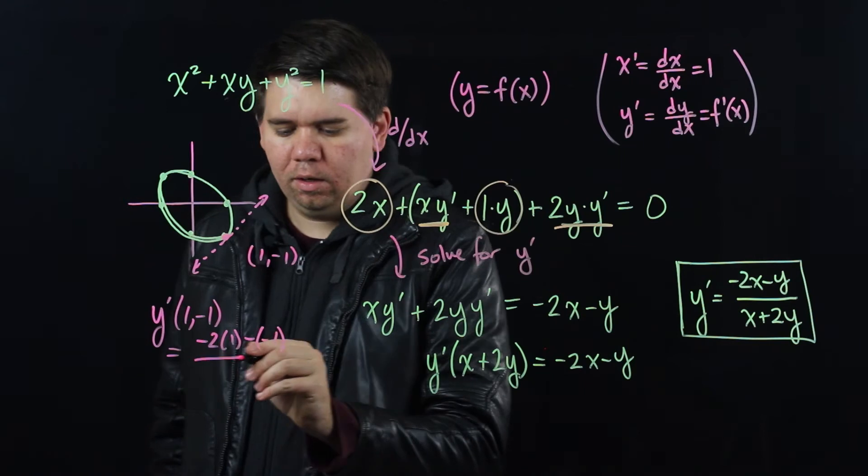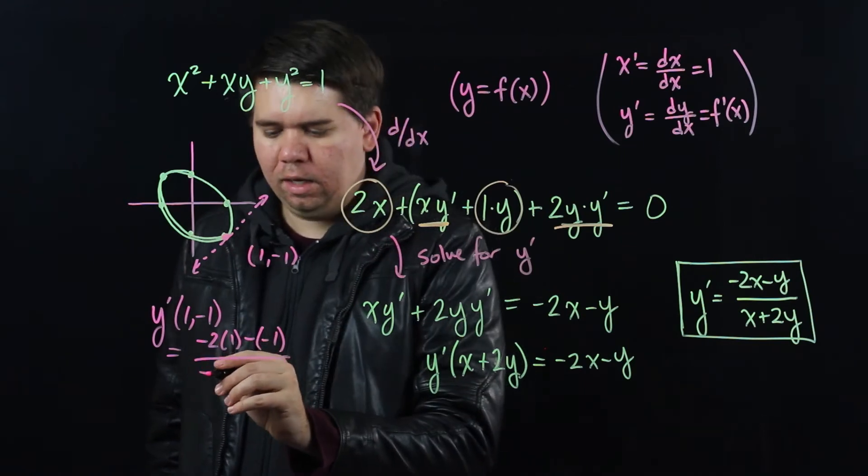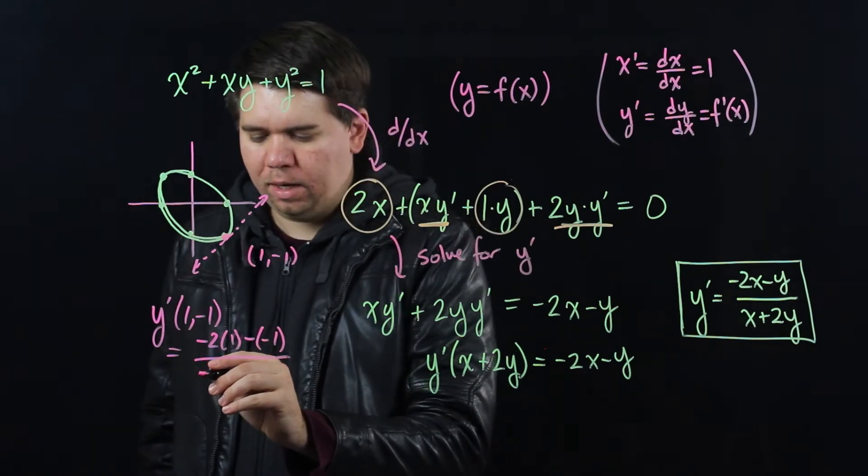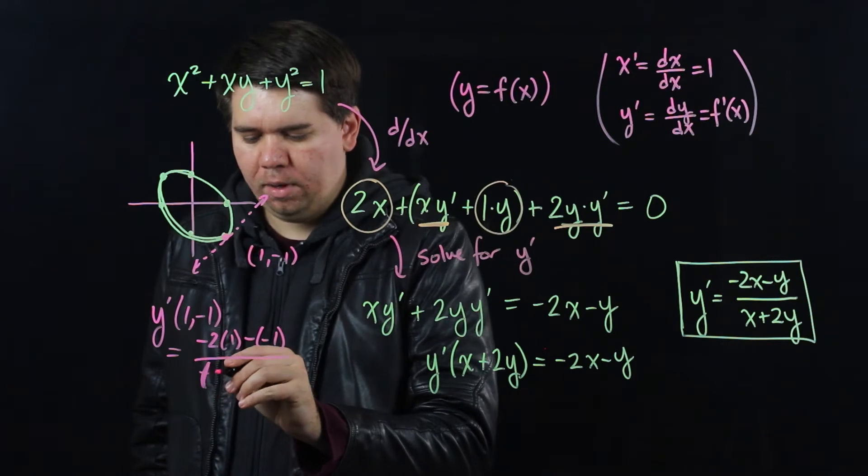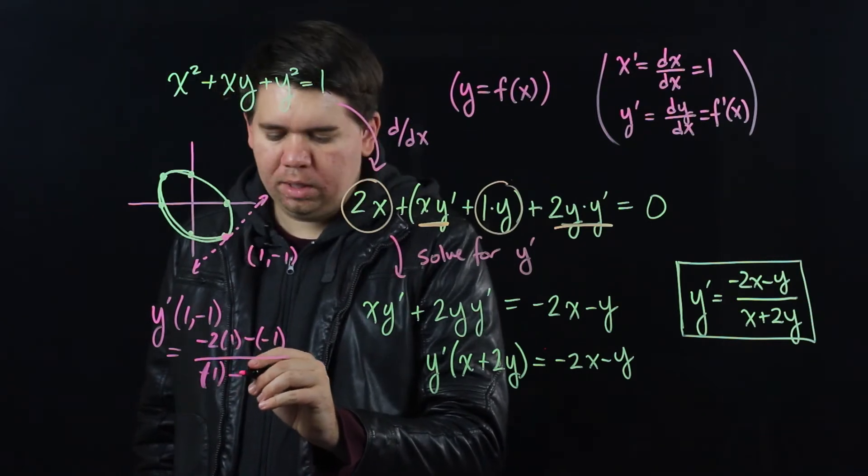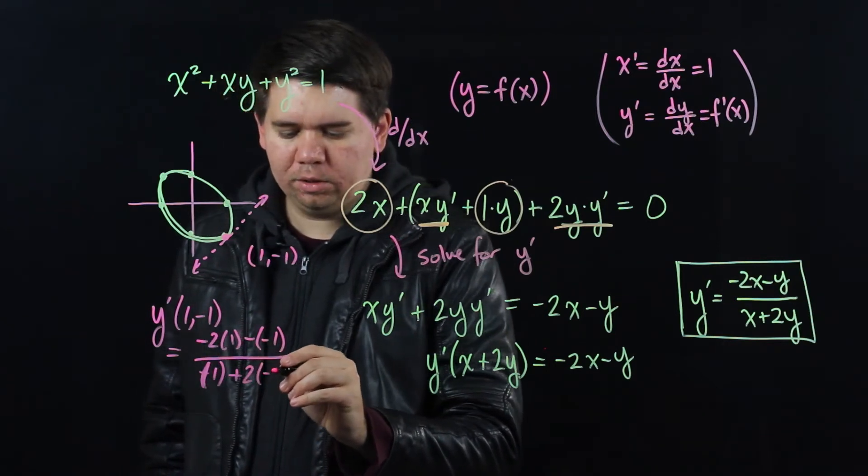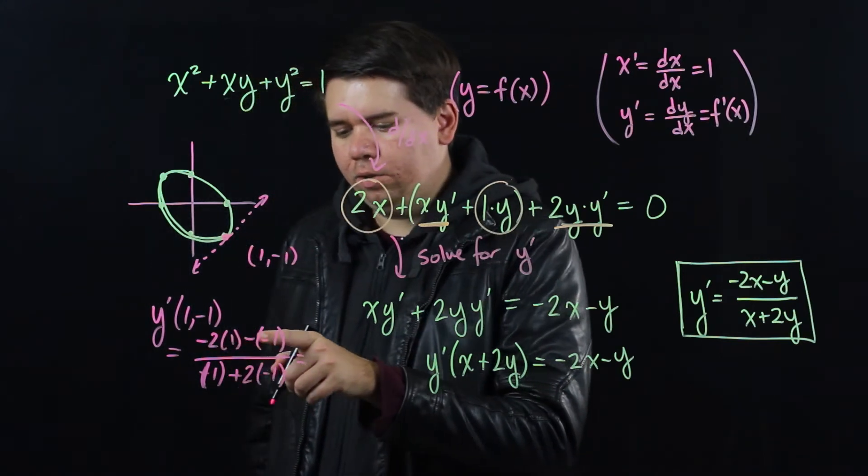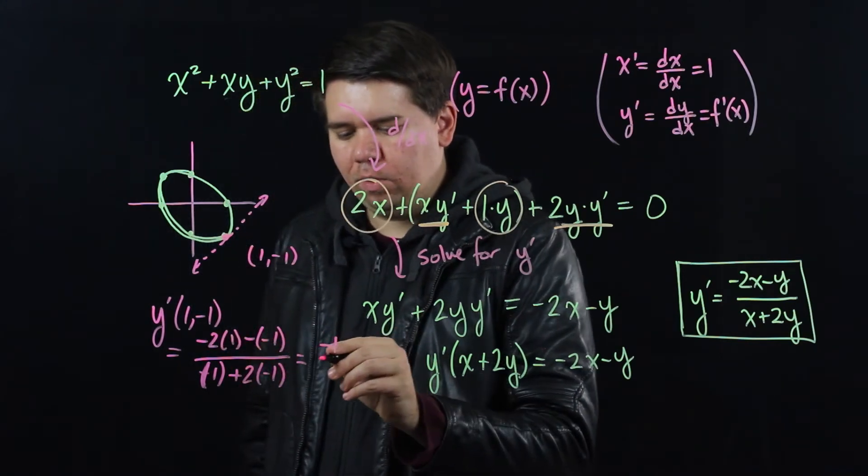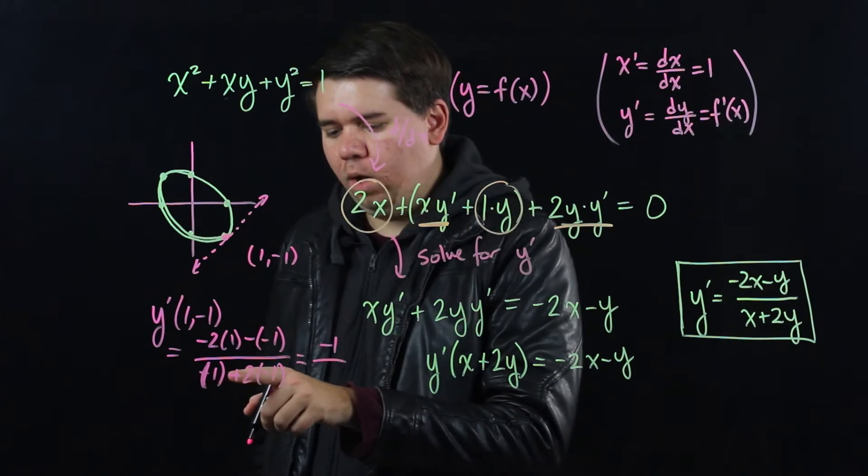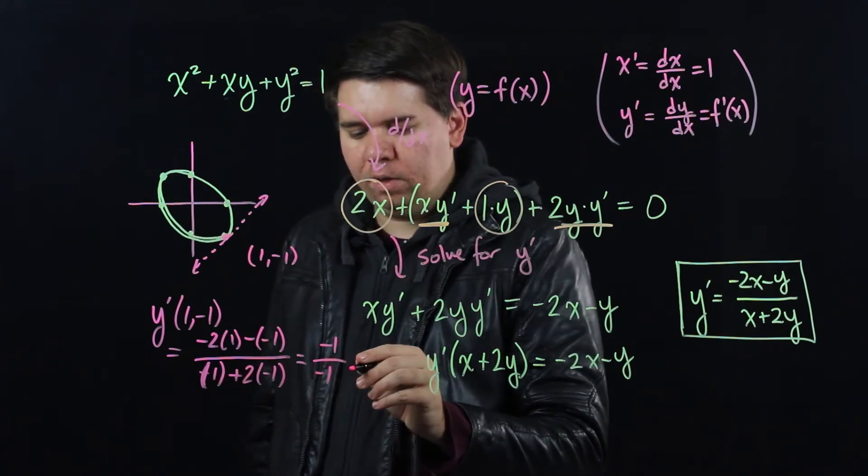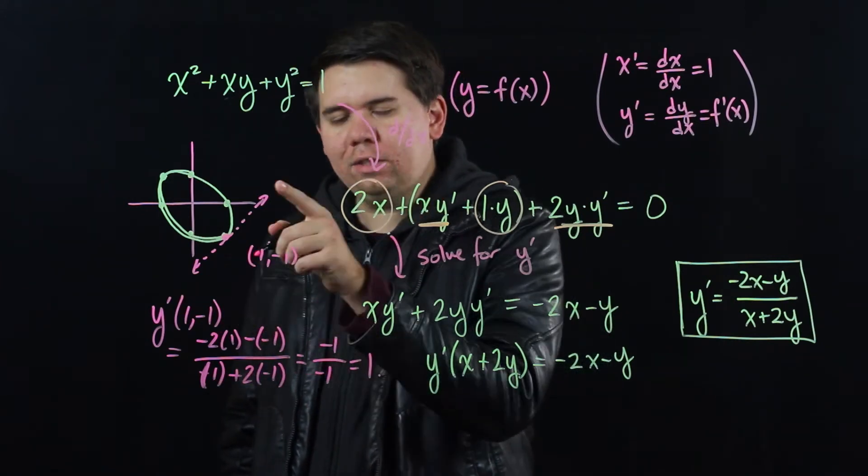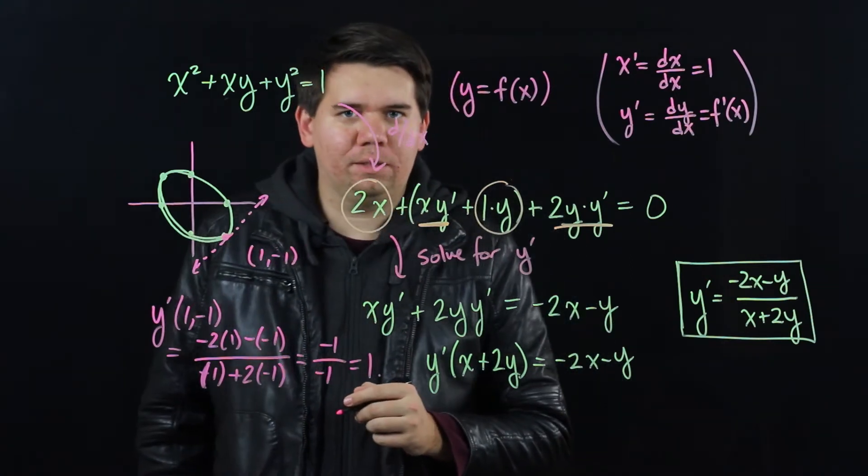Minus 1. Minus 1. All over x. So that's positive 1. So all over positive 1. Plus 2 times y, which is minus 1. What do I get? Minus 2 plus 1, which is minus 1. On top of 1 minus 2, which is minus 1. Slope of 1. Just like we expected.